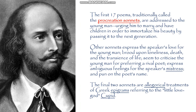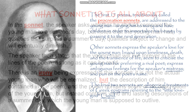The first 17 poems, traditionally called the procreation sonnets, are addressed to the young man urging him to marry and have children in order to immortalize his beauty by passing it to the next generation. Other sonnets express the speaker's love for the young man, brood upon loneliness, death, and the transience of life, seem to criticize the young man for preferring a rival poet, express ambiguous feelings for the speaker's mistress, and pun on the poet's name. The final two sonnets are allegorical treatments of Greek epigrams referring to the little love god Cupid.